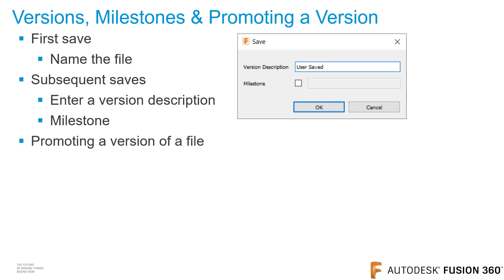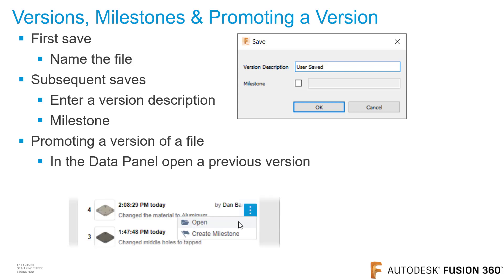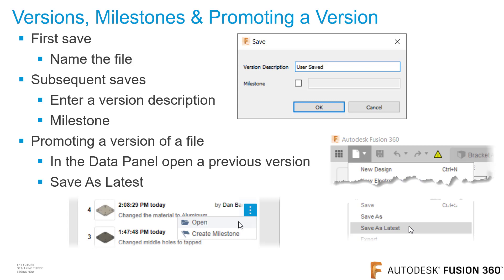As you're working, you may want to go back to a previous version of a file. You can do this by promoting a version. Open the data panel and click on the three dots to the right of the version you want to promote and click Open. Verify this is the version you want to promote, and if so, go to the file menu and click Save As Latest.